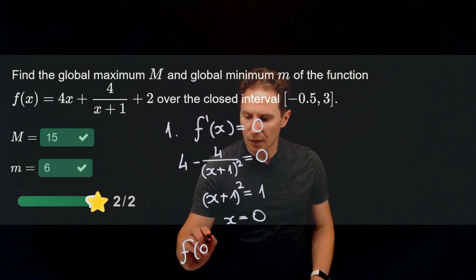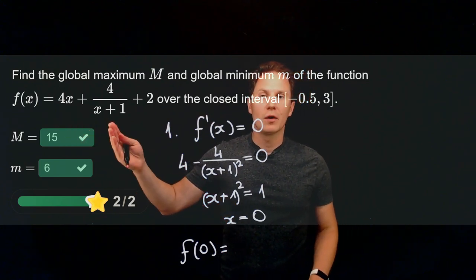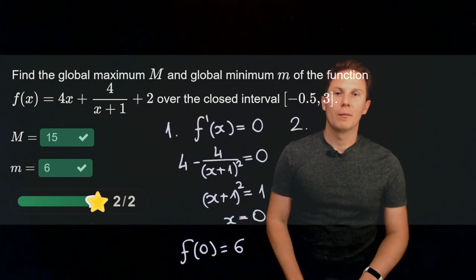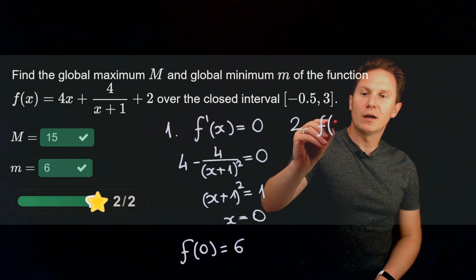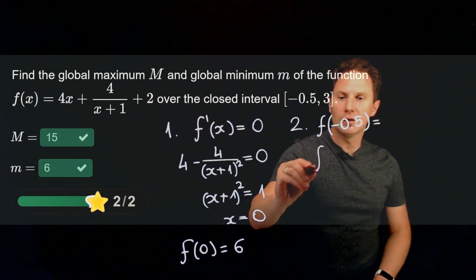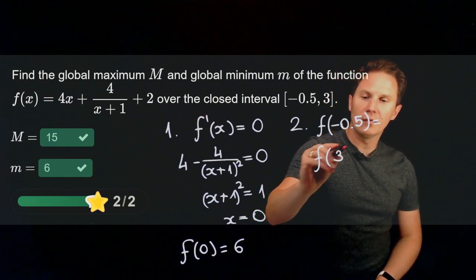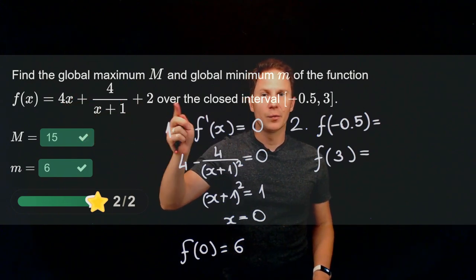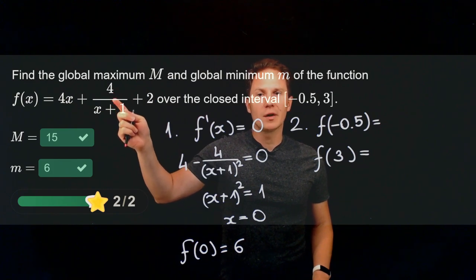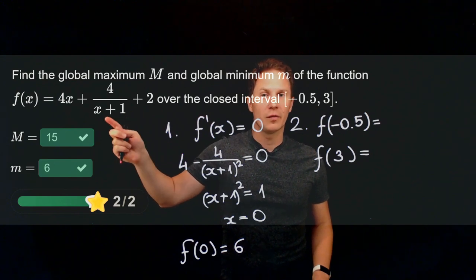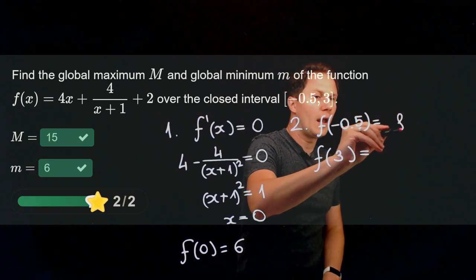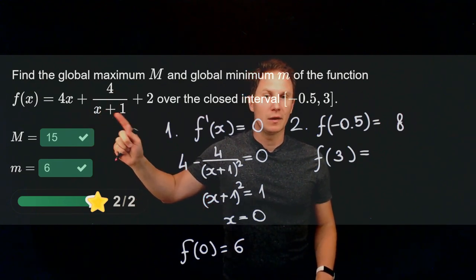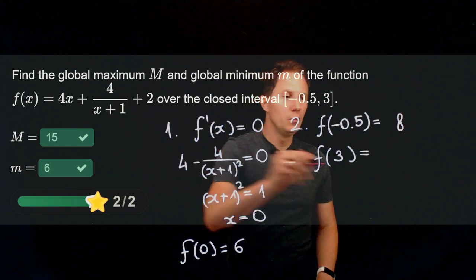Step two is to find the endpoint values. At x = −0.5: 4(−0.5) = −2, which cancels the +2 at the end, leaving 4/(−0.5 + 1) = 4/0.5 = 8. So f(−0.5) = 8. At x = 3: 4(3) = 12, plus 4/(3 + 1) = 4/4 = 1, plus 2 gives f(3) = 15.